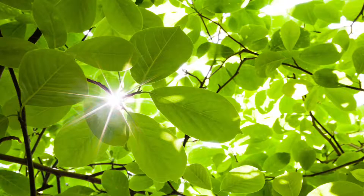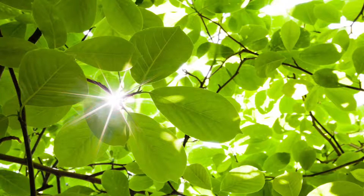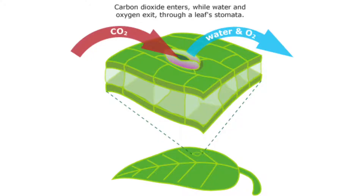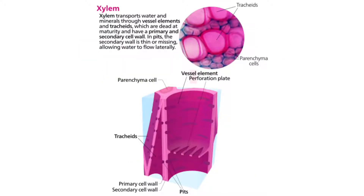Leaves make food for the plant. During photosynthesis, carbon dioxide from the air and water from the soil are converted to sugar and oxygen. Carbon dioxide enters and oxygen exits a leaf through tiny holes called stomata. Here's a diagram of stomata. The xylem in a leaf delivers water and the phloem carries away sugar.